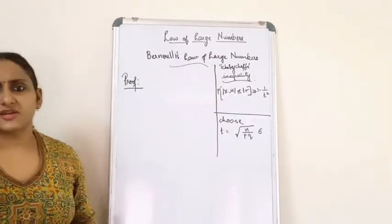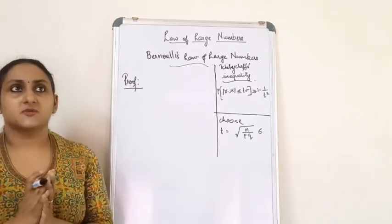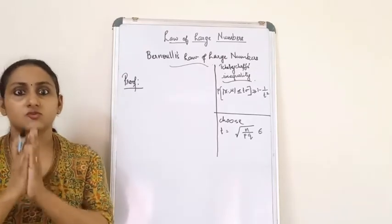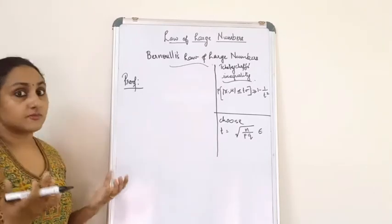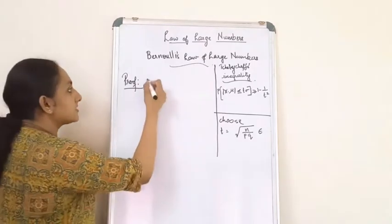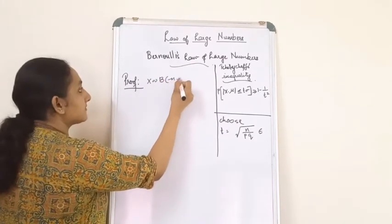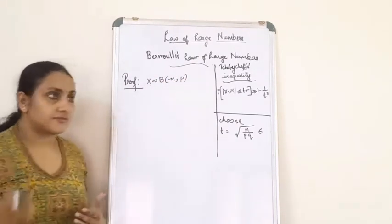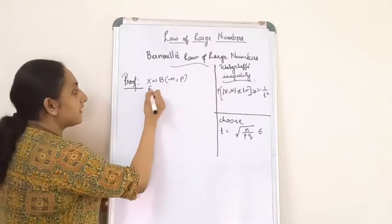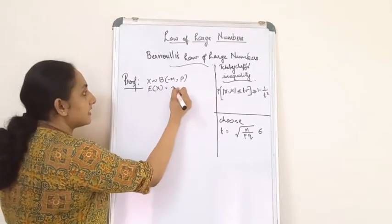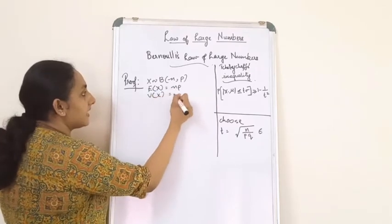From the statement we get certain information: x is a random variable that possesses only two outcomes — success or failure. So it is clear that x follows a binomial distribution. When x follows a binomial distribution, the mean of x is np and the variance of x is npq.